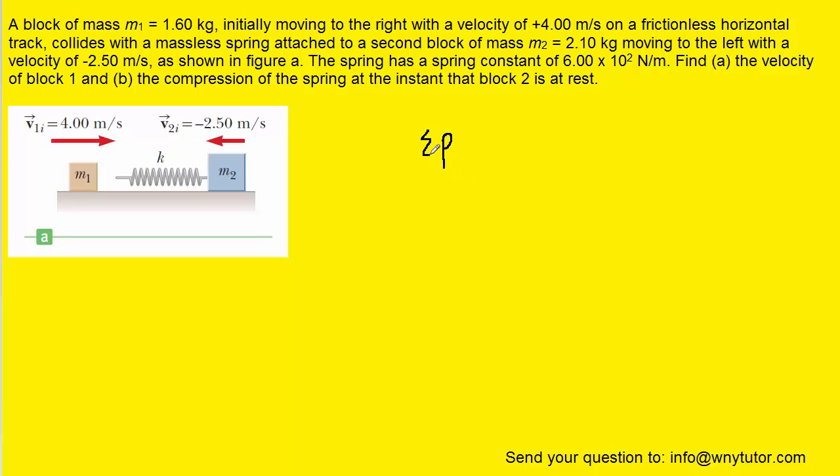Now basically that says that the total initial momentum is going to equal the total final momentum of the system. Now momentum we know is equal to mass times velocity. So we can expand the total initial momentum using the expression mv. Now there are two blocks so that means we would have to write m1 times the initial velocity of block one, plus m2 times the initial velocity of block two. And then we're going to set that equal to the same expression only we're going to change the initial values to final values.